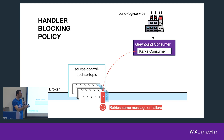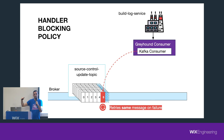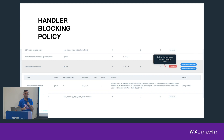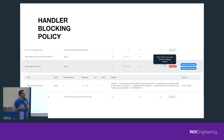With the greyhound consumer, you simply specify a blocking policy, meaning the same message will retry on error without moving forward. However, if you keep blocking on the same message, lag builds up — the producer keeps producing higher offsets while the consumer is stuck far behind. For this, every service automatically gets an alert and a dashboard, so the developer can view the failed message and decide whether to release it if it's not a critical error.